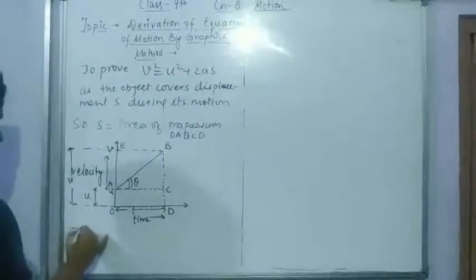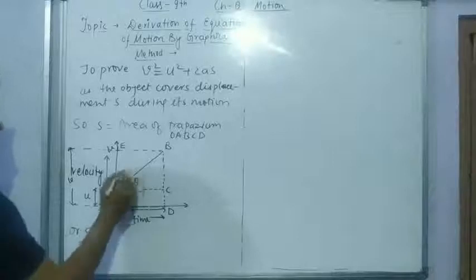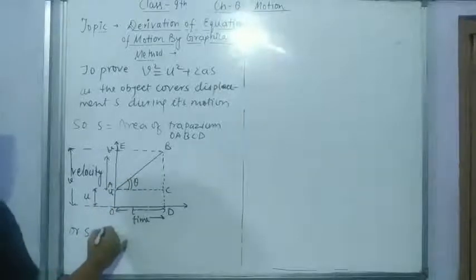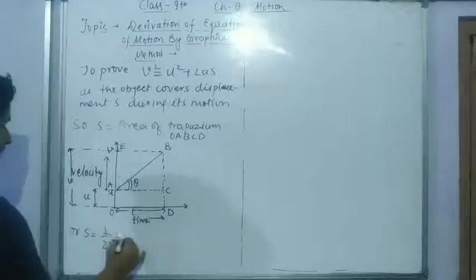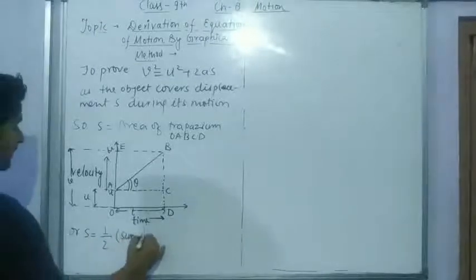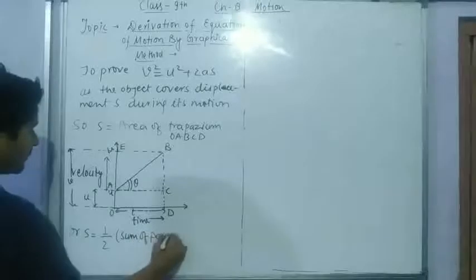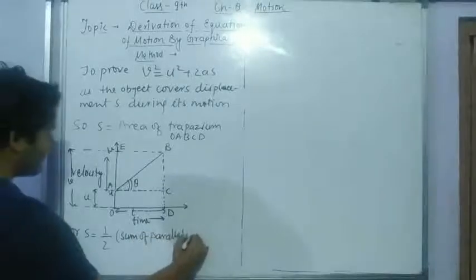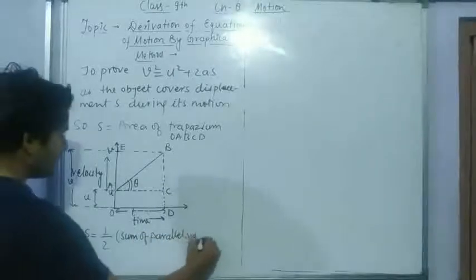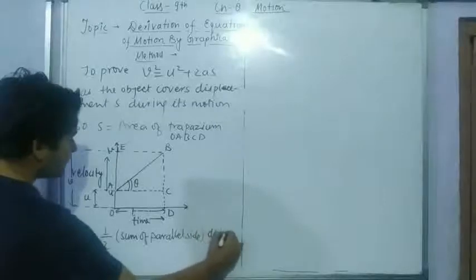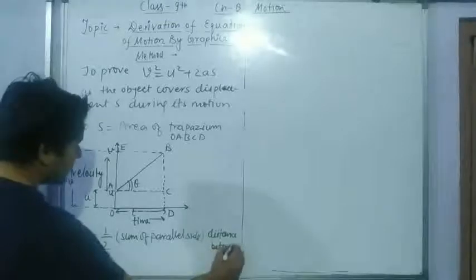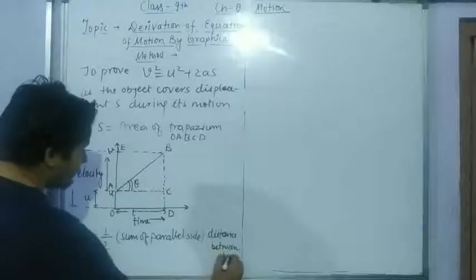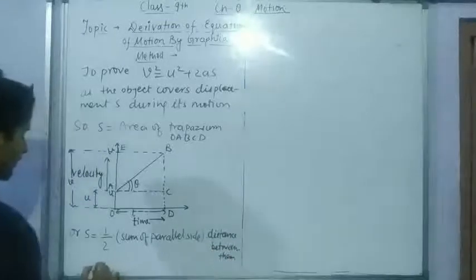So, s equals to area of trapezium will be what? It will be equal to 1/2 sum of parallel sides, sum of parallel sides multiplied by the distance between them. Now what it will be?